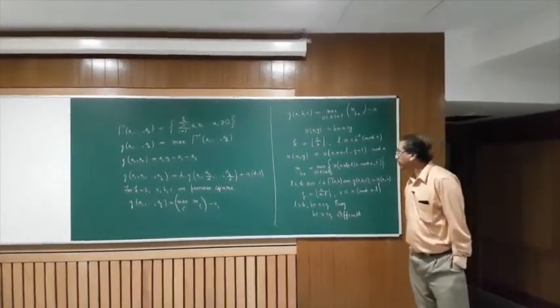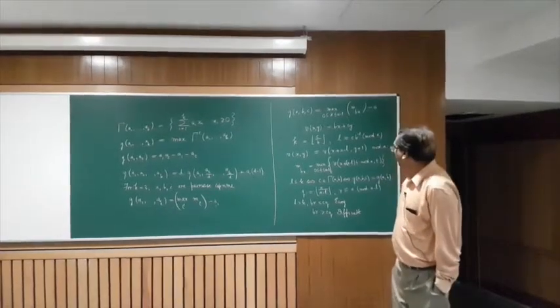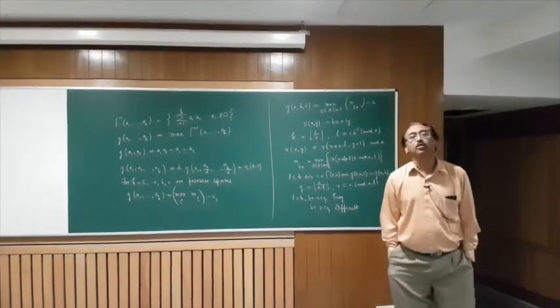Therefore we only need to consider the case l greater than k. We introduce two further variables q and r. q is the quotient of a by a minus l and r is the remainder of a by a minus l.